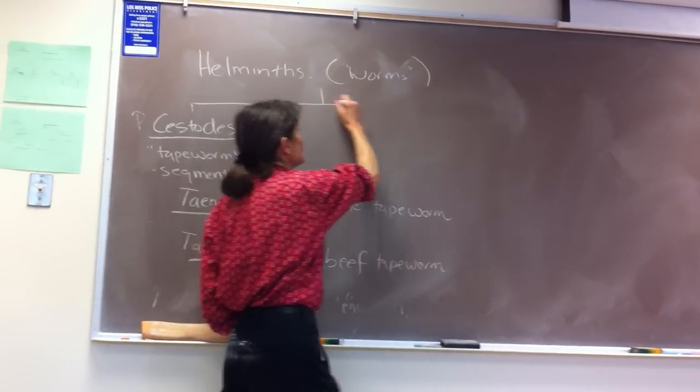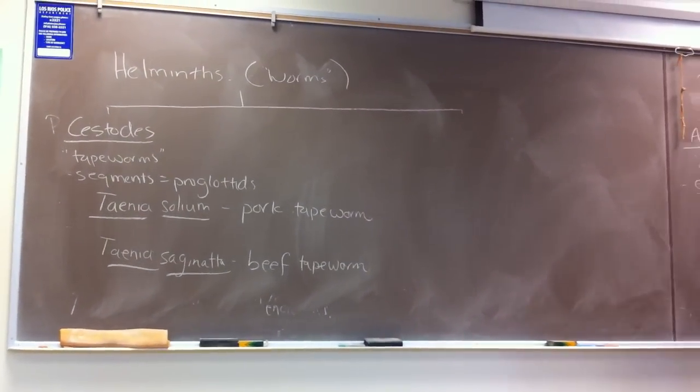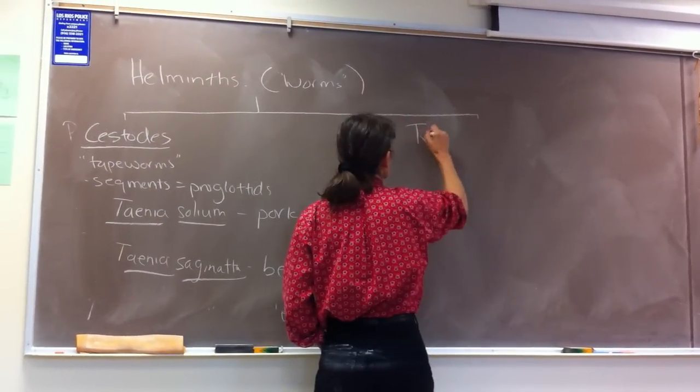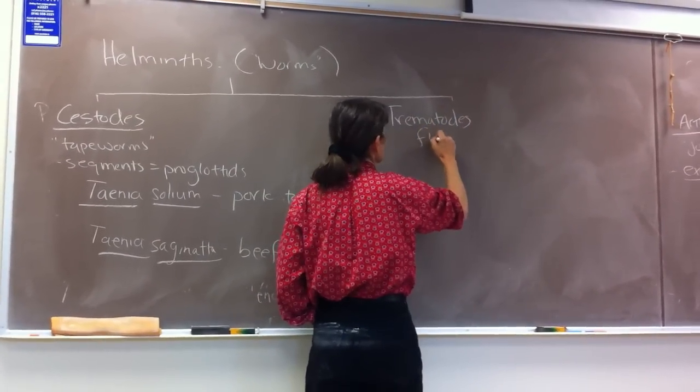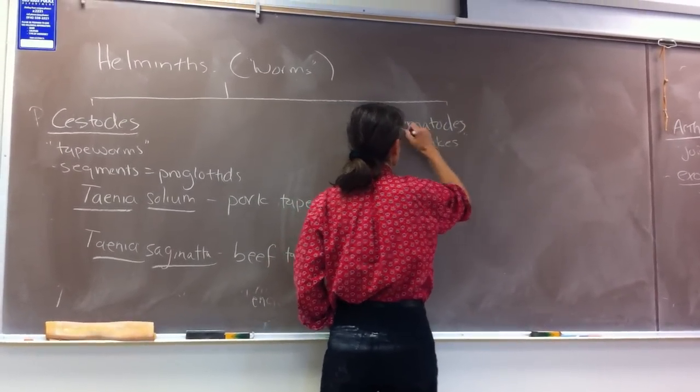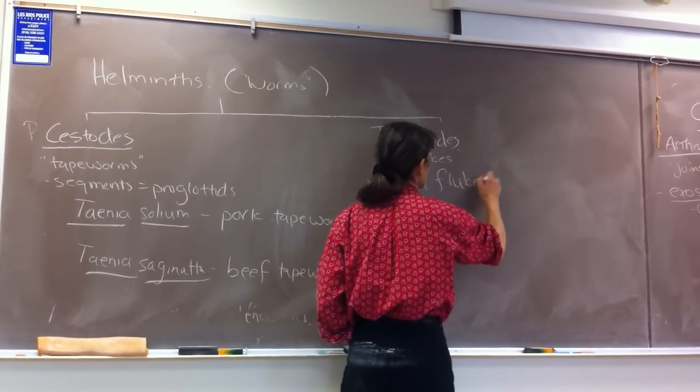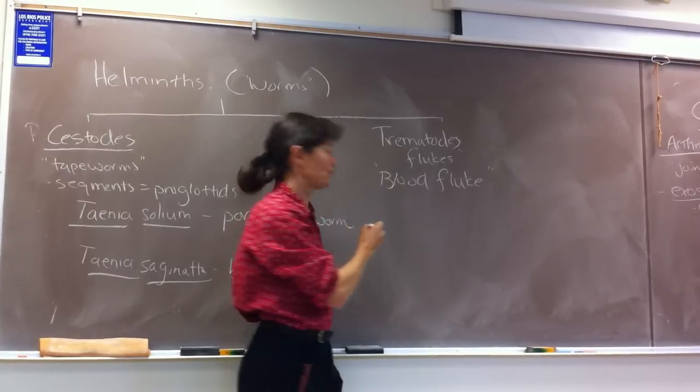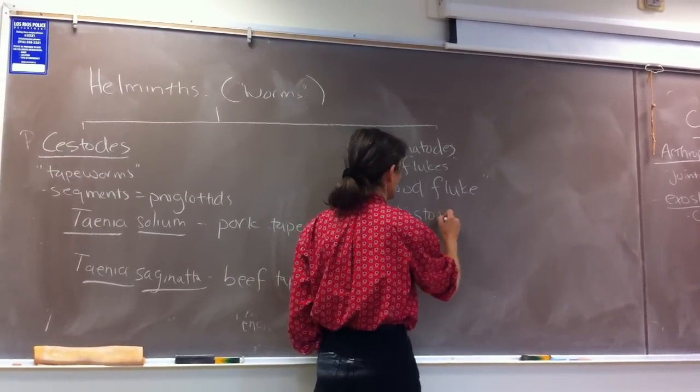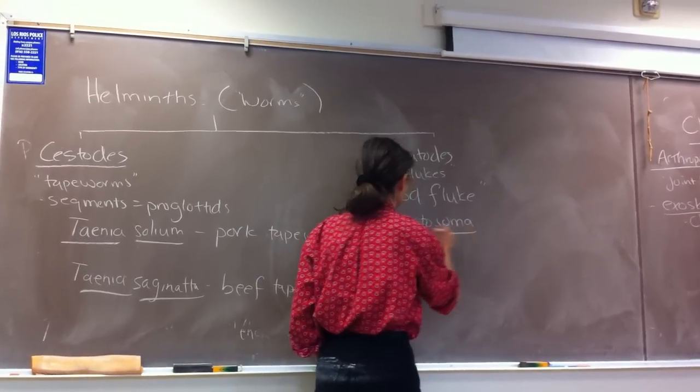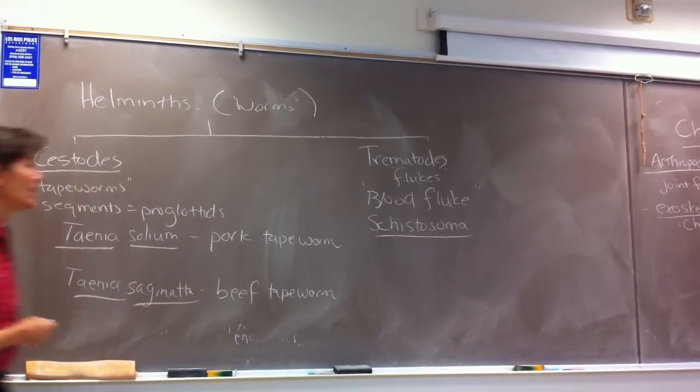The second group that we'll discuss today are the trematodes, and these are the so-called flukes. The one we're going to discuss has a common name of the blood fluke because it lives in blood vessels, and it's called schistosoma.